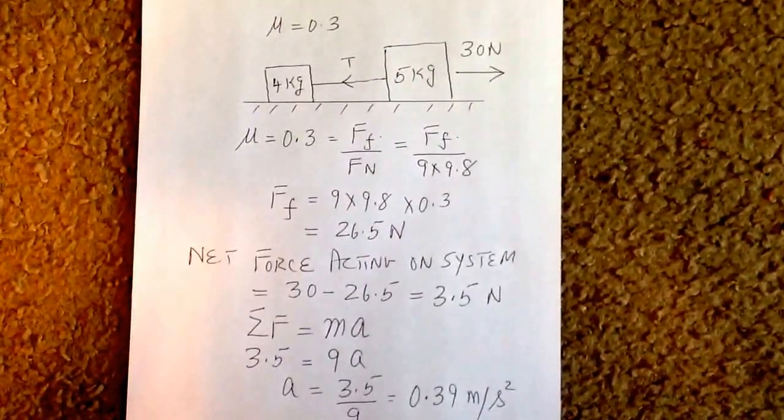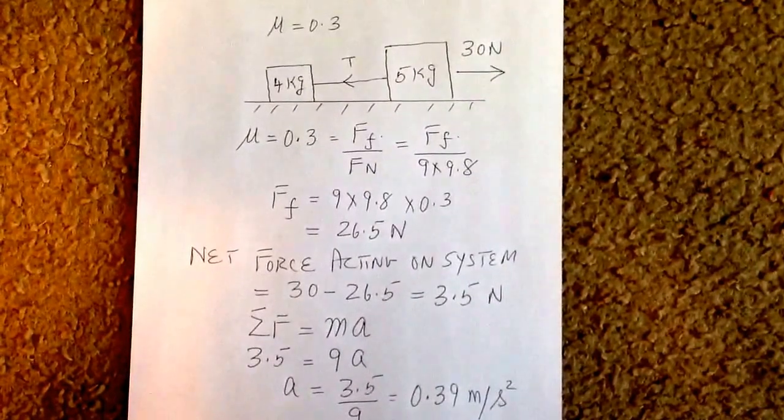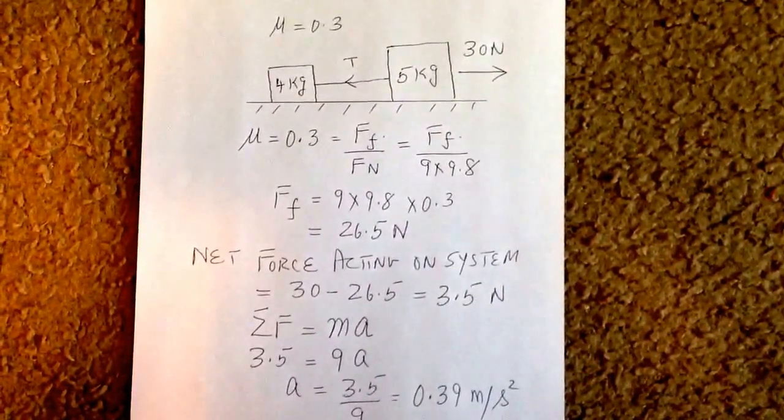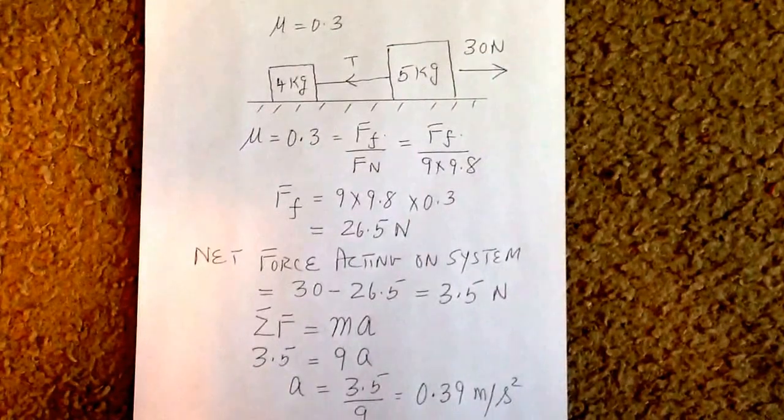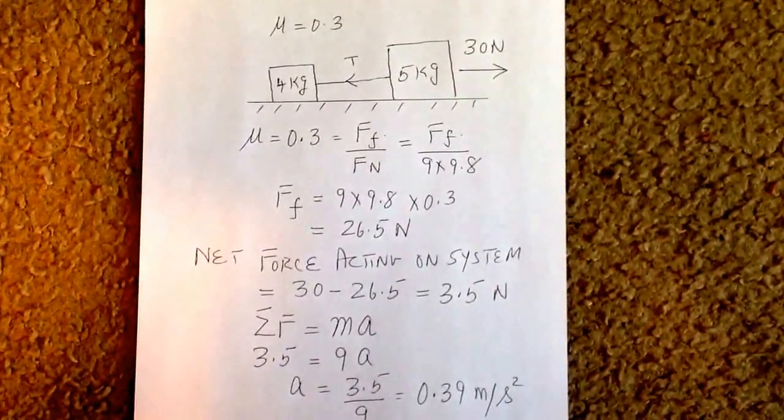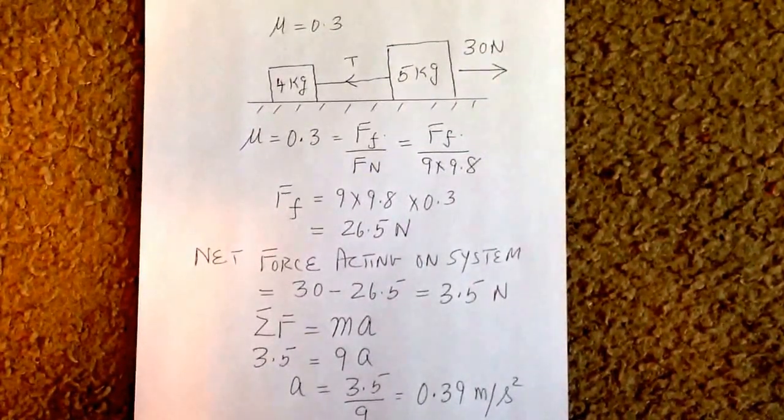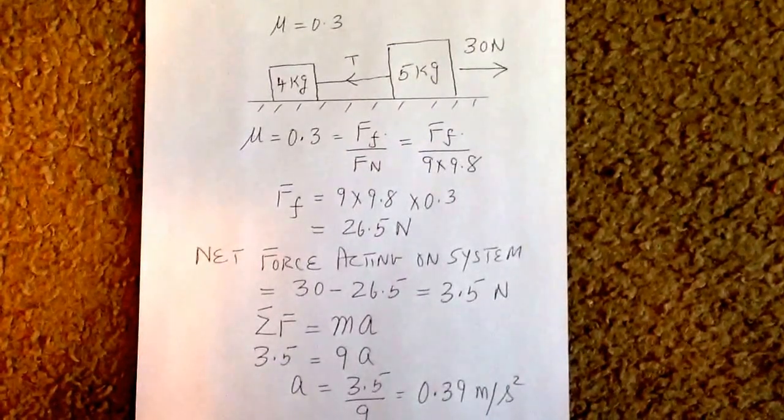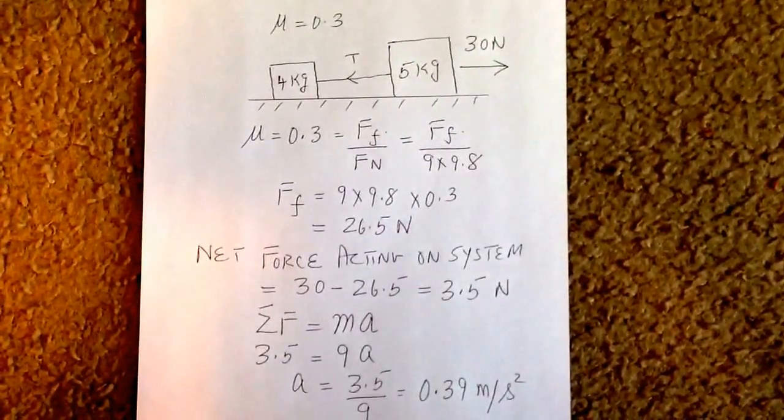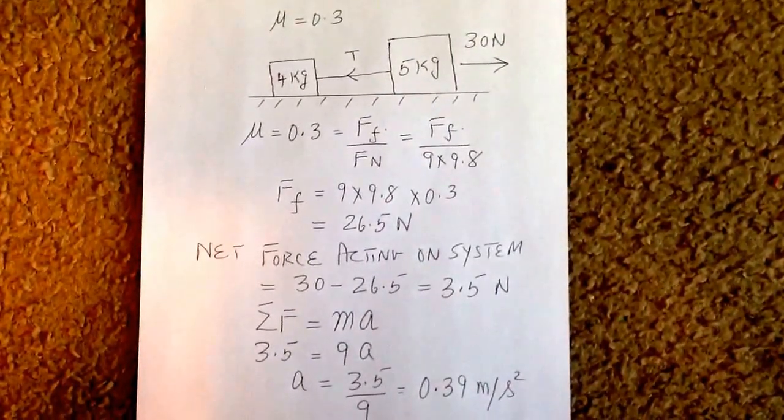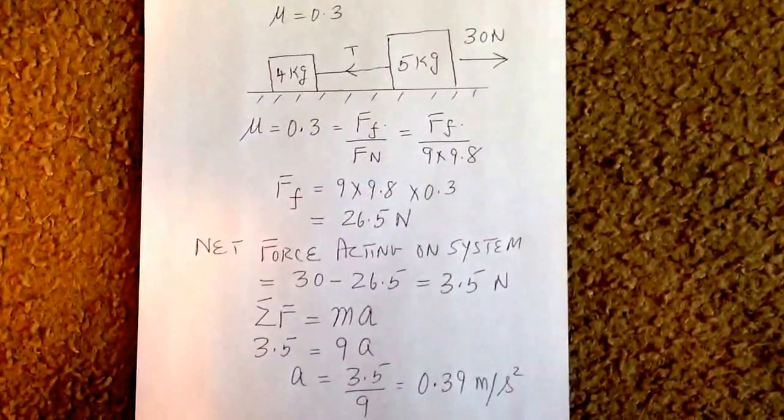Therefore, the normal force, the force in the upward direction of equal value is 9.8 times 9, from which we get the force of friction to be equal to 26.5 newtons.